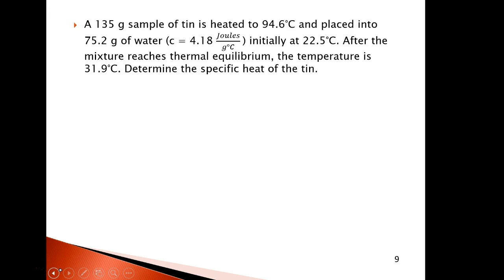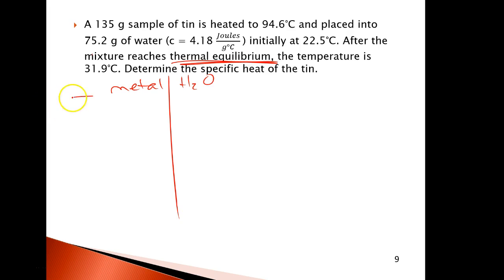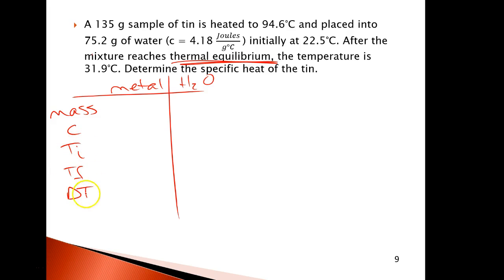Here's an example of what you'll be doing: take a piece of metal, heat it up, put it in cold water. After the mixture reaches thermal equilibrium — meaning they reach the same temperature — you're given that temperature. To organize all the numbers, I make a chart with columns: mass, specific heat, Ti, Tf, delta T, and Q.